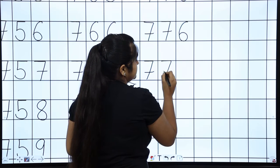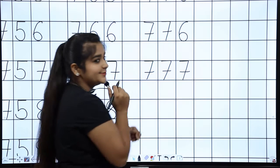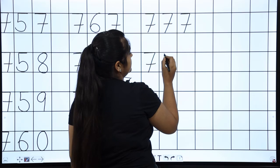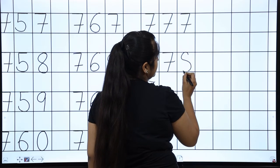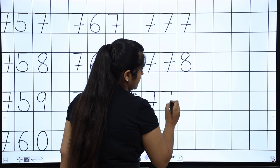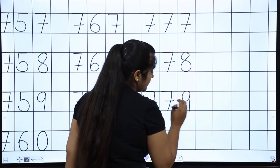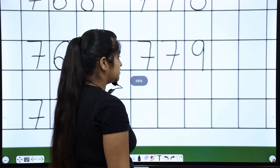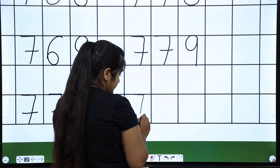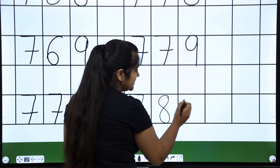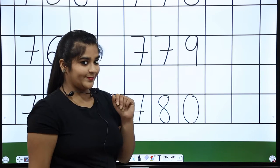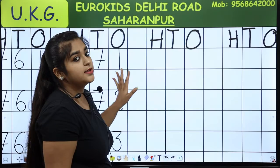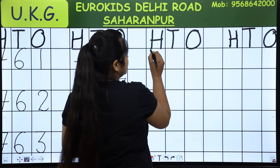Seven hundred seventy-six, seven hundred seventy-seven, seven hundred seventy-eight, seven hundred seventy-nine. Now, ma'am, you don't know what will come. Tell us what will come. Yes, very good. Seven hundred eighty. Correct. You are very intelligent.